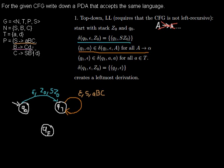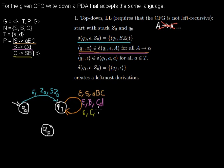We have another rule: b expanding to cd. I add the same for that — epsilon from the input, read b from the stack, and push c and d. And for the next rule: read nothing from the input, read c from the stack, and push S and b. For the last rule: read nothing from the input, read c from the stack, and push d onto the stack.